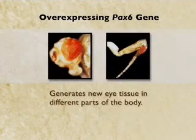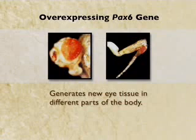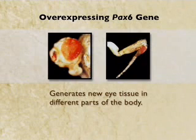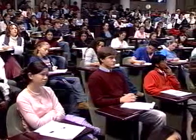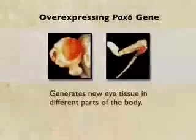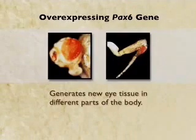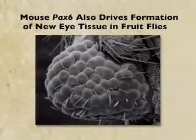Even more remarkably, if you overexpress this key developmental regulator of eye formation, you can generate new eye tissue in completely different body parts. This is an experiment done by Walter Gehring's lab, taking the PAX6 gene and engineering it to be expressed during leg development in a developing fruit fly. When you overexpress the eye regulator gene, you induce on the leg of the fruit fly a tiny little patch of red compound eye tissue. If you do a scanning electron micrograph, that structure has exactly the kind of independent repeated eye unit that you would find in the normal fly eye.